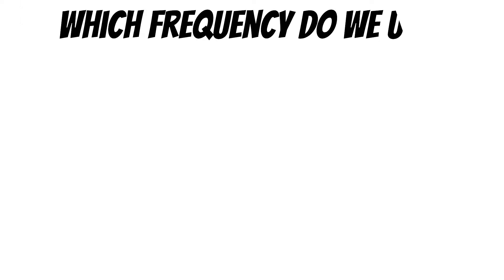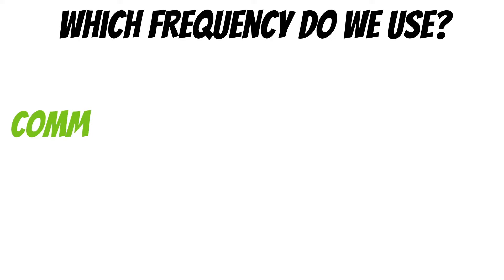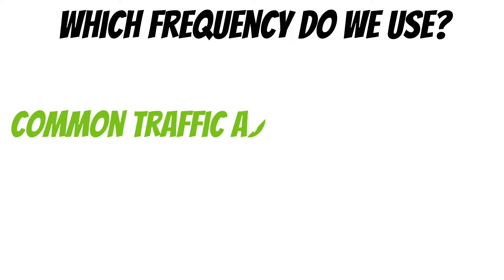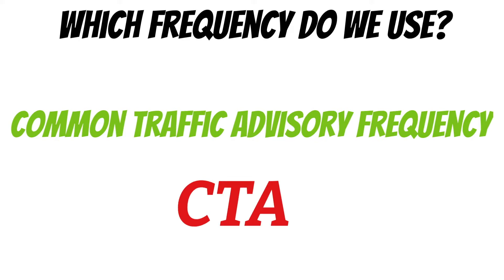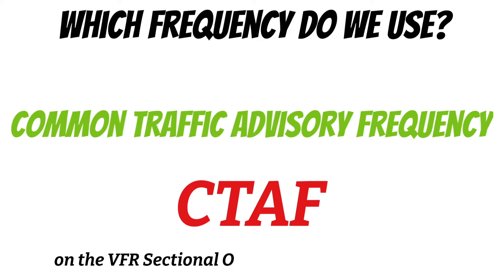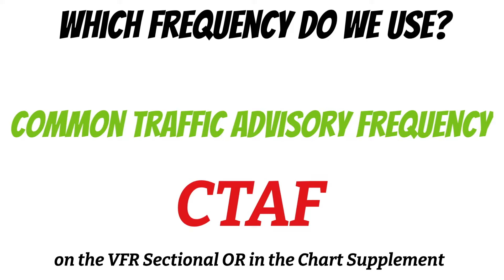Before we can talk about that, let's talk about which frequency we need to use. It's called the Common Traffic Advisory Frequency, or CTAF, because we're advising other traffic where we are in the pattern. And you can figure out which frequency to use by either looking on your VFR sectional or in your chart supplement.